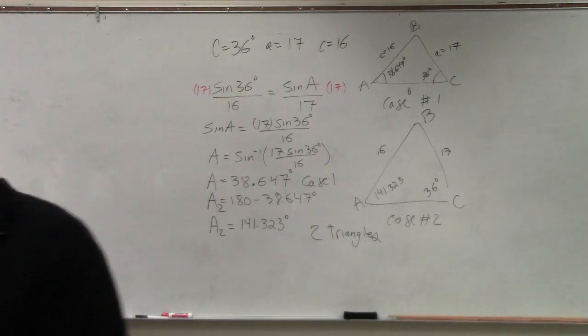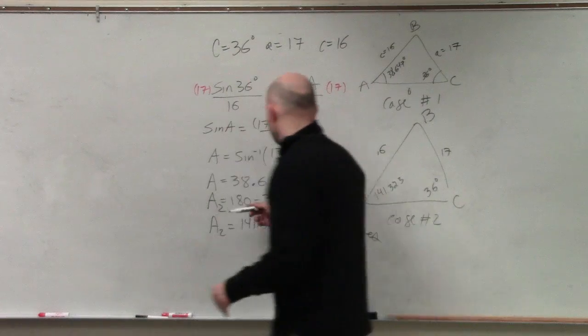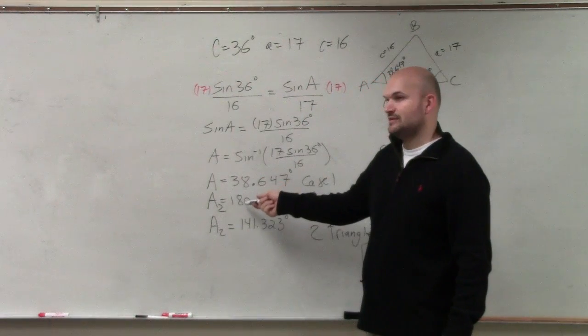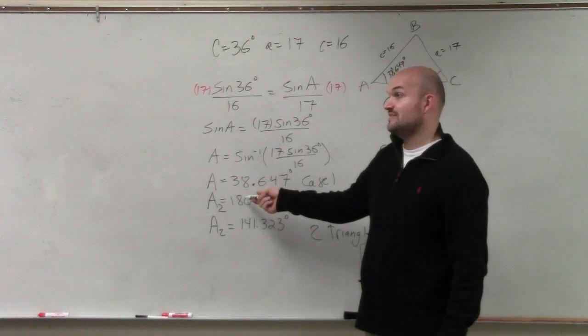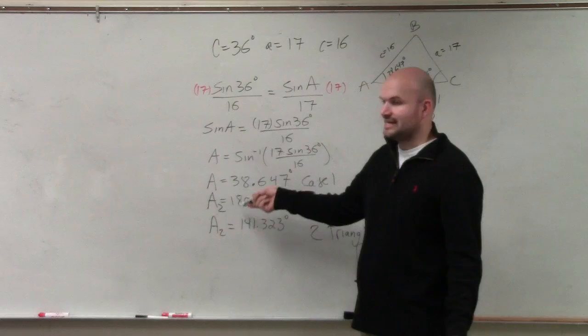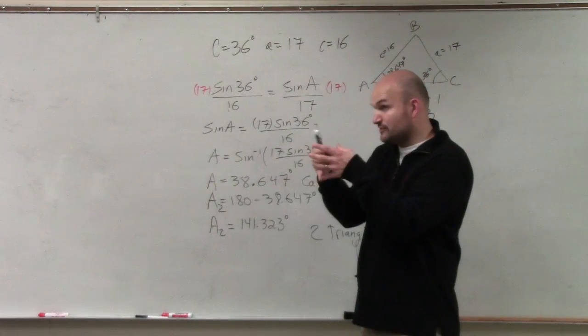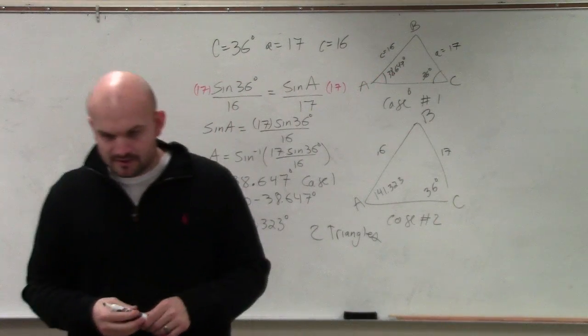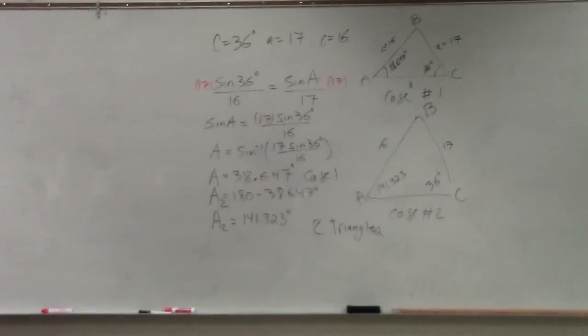Where did A2 come from? A2 is basically me taking A1 and subtracting it from 180, to find the second case, see if that works or not. So basically, all you do is, once you find your first angle, subtract it from 180. Yeah, basically, you're finding the reference angle.